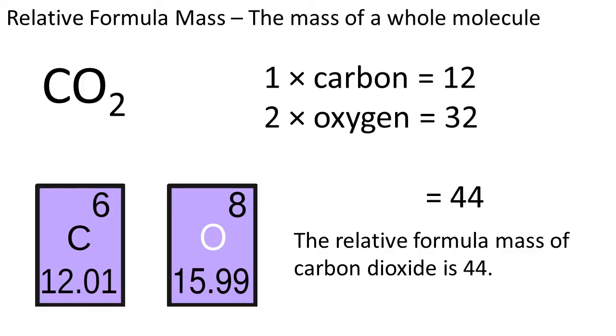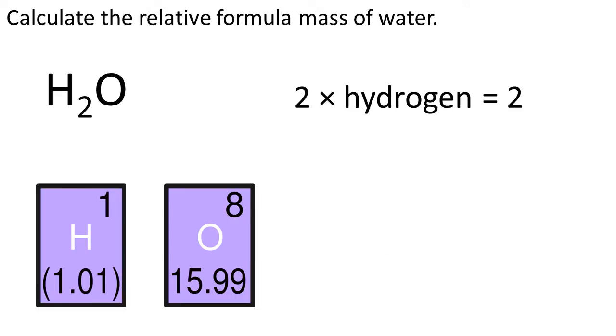Let's do another one. Calculate the relative formula mass of water. Water is H2O. Using our periodic table, we see that hydrogen has a mass of 1. But this time, we've got two of them. Remember, the 2 after the H tells us that we've got two hydrogens and only one oxygen.